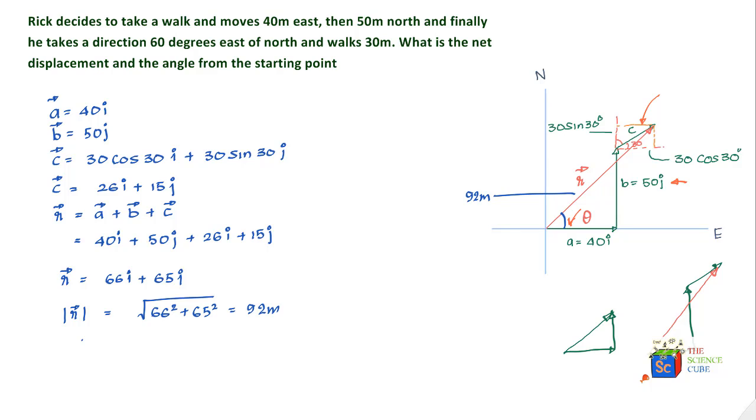Tan of theta is equal to the opposite side, and you would see that the opposite side is nothing but this, which we have found as 65 meters. The base is nothing but this, which we have found as 66 meters. You see these values are right here.